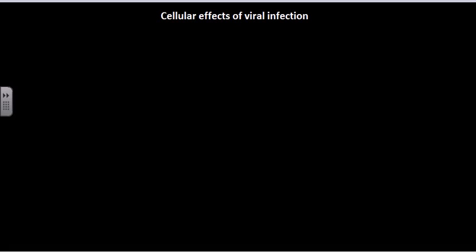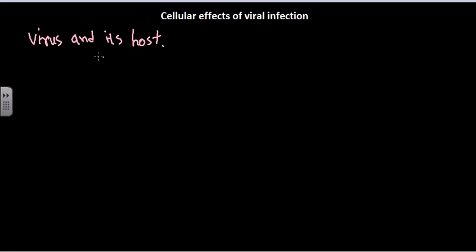Welcome back. In this video tutorial, we'll be talking about the cellular effects of viral infections. Viruses are extracellular bodies that attack cells, acting like intracellular parasites — they are only alive when inside a host cell. So when discussing the cellular effects of viruses, we are talking about a virus and its host. There are four different types of interaction we can see at the cellular level.